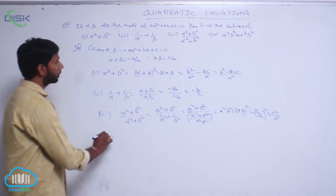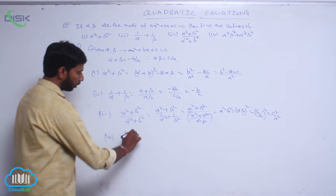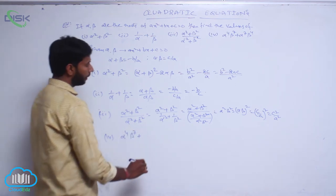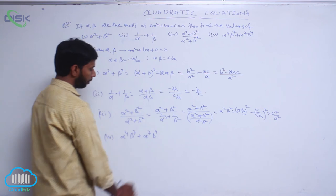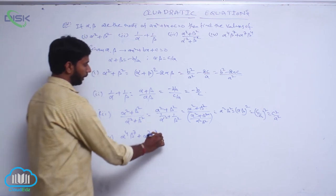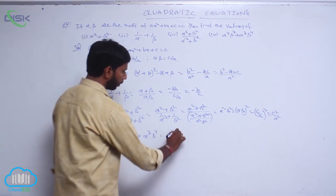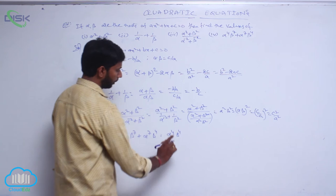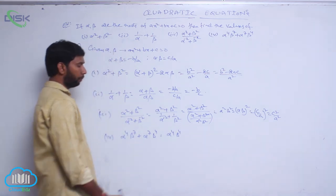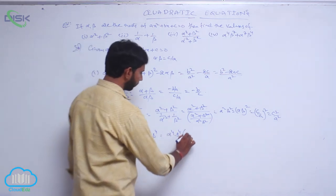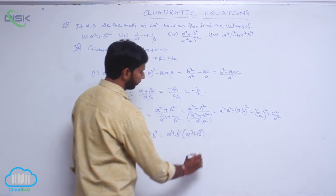For the fourth one, alpha power 4 beta power 7 plus alpha power 7 beta power 4. In both terms, alpha power 4 beta power 4 is common, so factoring it out gives alpha power 4 beta power 4 into alpha cubed plus beta cubed.